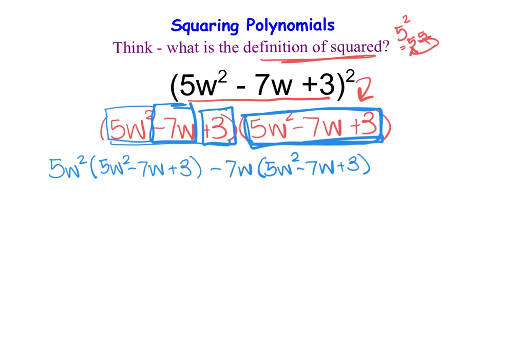And then finally, I'm going to take this final 3 here and multiply it by everything in the second parenthesis here. So I have plus 3 times 5w squared minus 7w plus 3. So I'm taking everything in the first parenthesis and multiplying it by everything in the second.